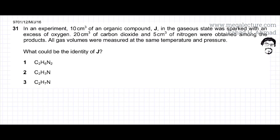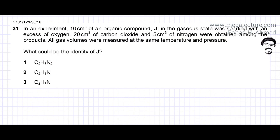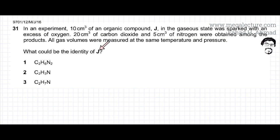The following question reads: in experiment 10 cm³ of an organic compound J — you are given three options. J is a compound that contains carbon, hydrogen and nitrogen but in different amounts. We need to figure out which of these compounds could be the identity of J.